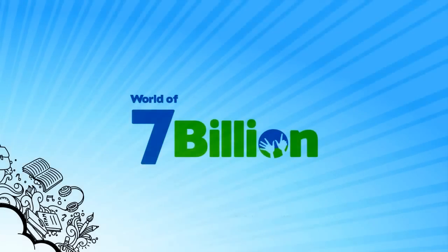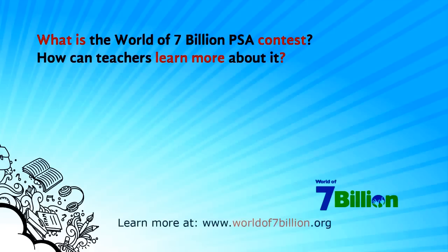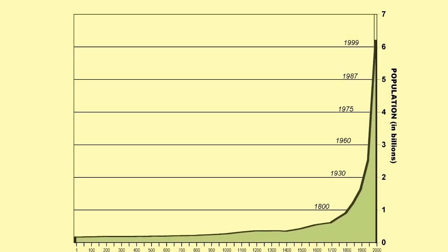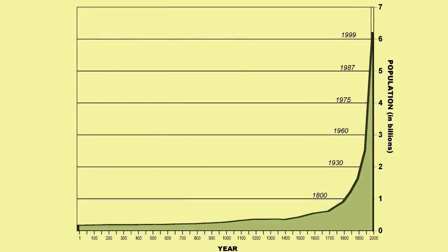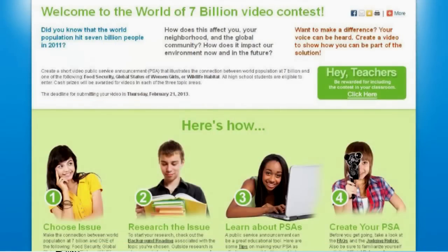Let's talk about this World of 7 Billion PSA contest. Pam, can you give us detail about what this contest is and how teachers can learn more? We reached 7 billion in 2011, and as a lead-up to that, our program wanted a way to engage students. So we launched this contest where high school students are asked to prepare a public service announcement — 30 to 45 seconds in length — that shows the connection between world population growth and one of several topics.